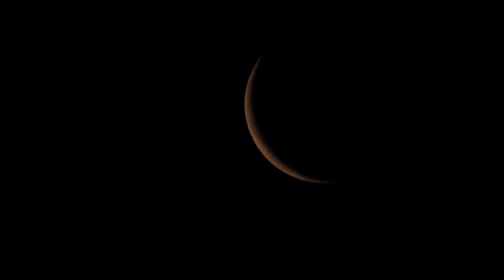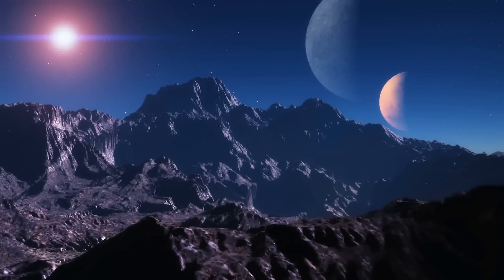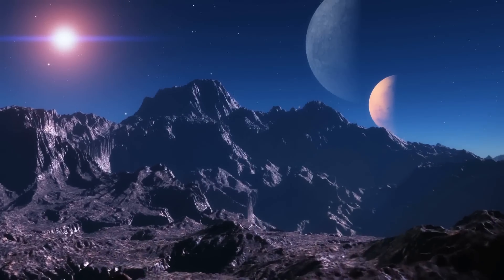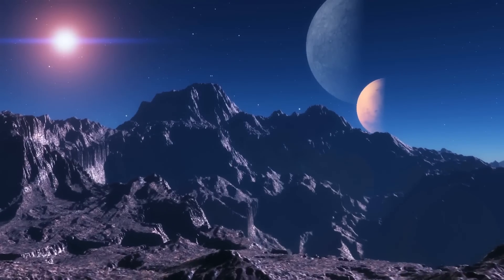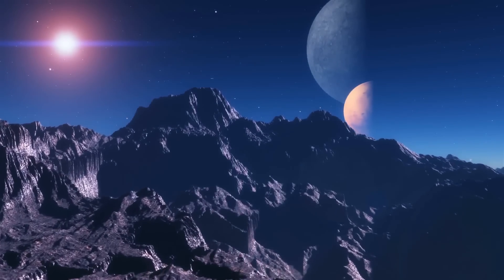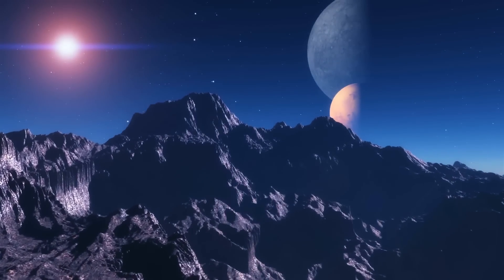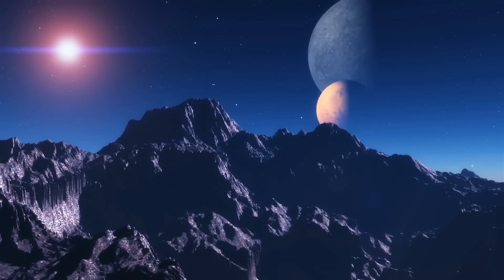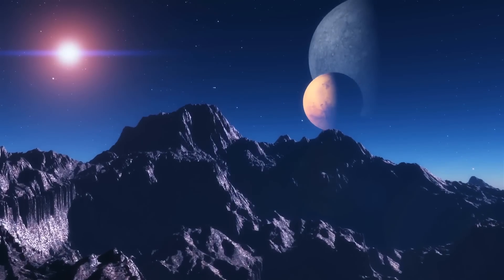The second planet, recently discovered, is called PDS-70c. This planet sits on the outer edge of the star system, roughly 3.3 billion miles away from the star. Its mass is between 1 to 10 times the mass of Jupiter.